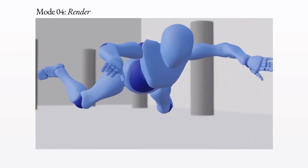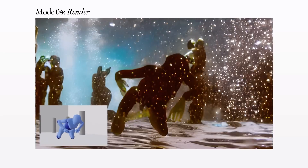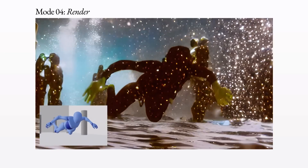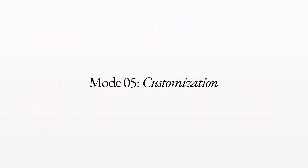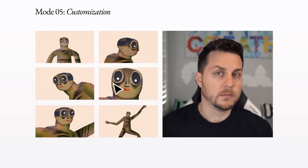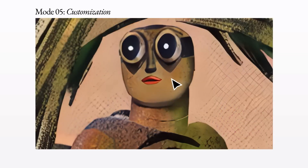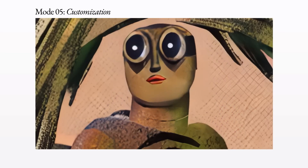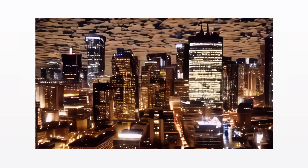Render — Mode 7. Turn untextured renders into lifelike outputs by applying an input image or prompt. Say goodbye to rough drafts and hello to polished perfection. Customization — Mode 8. If you're hungry for ultimate control, Gen 2 lets you customize the model for even higher fidelity results. It's like having a digital assistant tailored to your artistic vision.